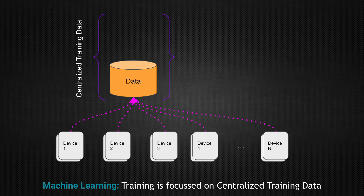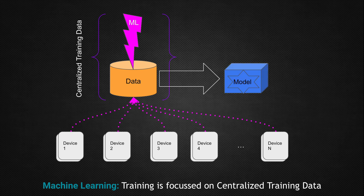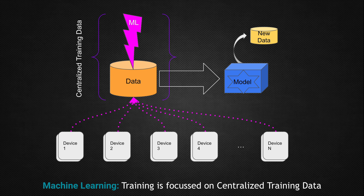Once an enterprise or any organization decides to apply machine learning on the centralized training data, various algorithms, libraries, or machine learning frameworks are used. The output is a machine learning model generated through several iterations of applying machine learning on the training data. Finally, the model is ready to apply to the business process — it is applied on new data which gives you the results you are looking for. That's traditional machine learning, where training is focused on centralized training data.